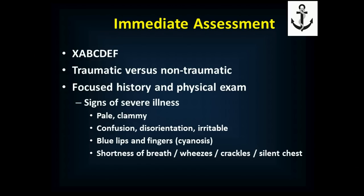If you find any of the following, these are signs of severe disease: someone who is pale or clammy; if they're confused, disoriented, or even more irritable than usual, suggesting less blood flow to the brain; blue lips and fingers — cyanosis — meaning you're not getting good oxygen into the blood; shortness of breath; wheezes — high-pitched musical sounds; crackles — the sound of rubbing hair beside your ear between your fingers; or no air movement at all, a silent chest. All are very concerning findings for a patient with chest pain.